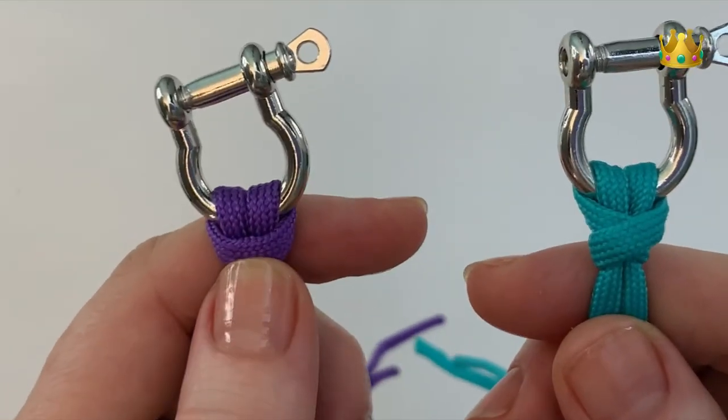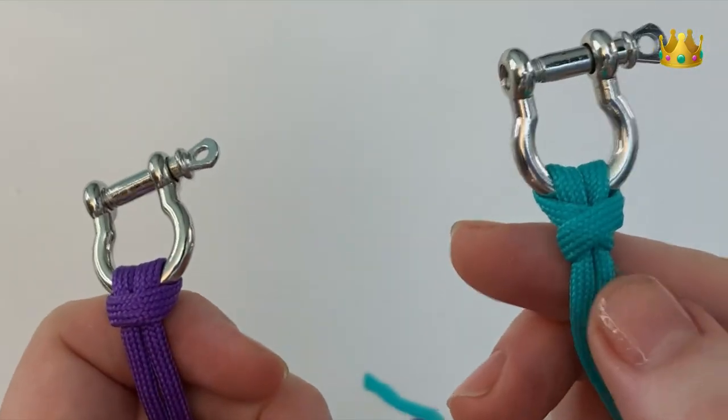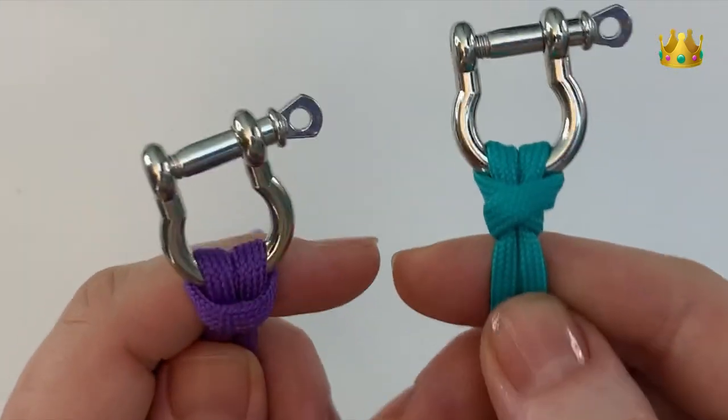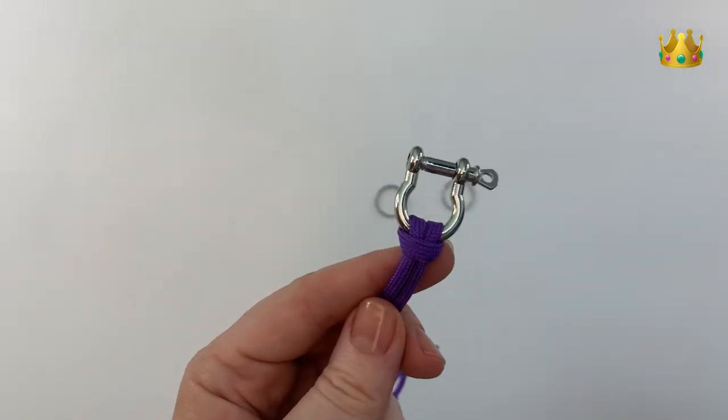In this video we're tying the cow hitch and the bull hitch. The cow hitch on the left in purple and the bull hitch is in the green. These are perfect for securing a rope to an object.